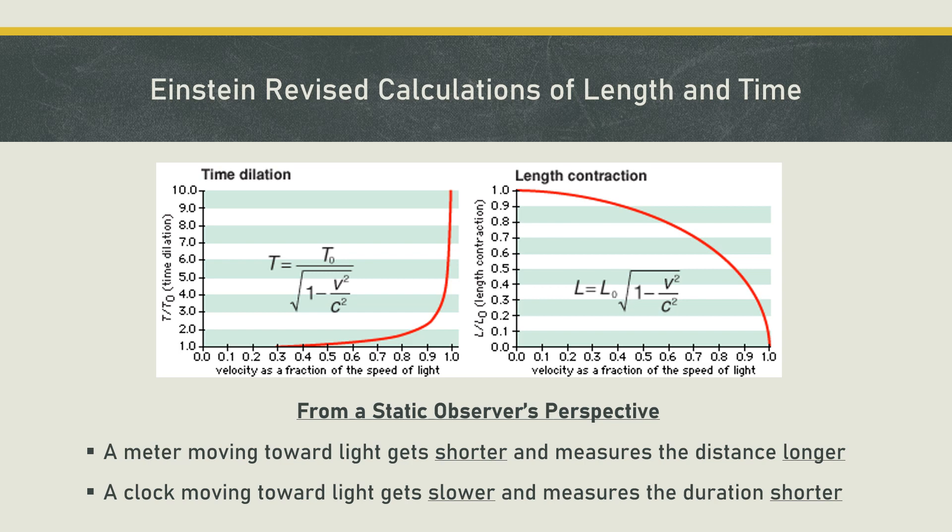There was only one constant for all observers: the speed of light. Distance and time were adjustable parameters. Einstein suggested that these adjustable parameters of distance and duration implied that the instruments being used in measurement were being modified by movement. These changing instruments are called contracted length and dilated time. Length contraction means a meter is shrinking; time dilation means a clock is running slower.